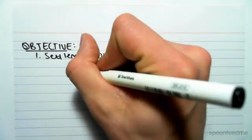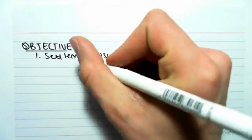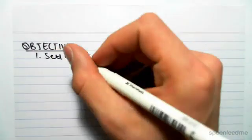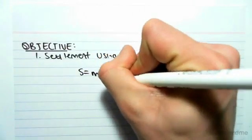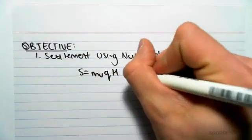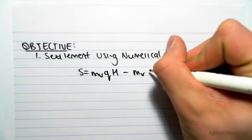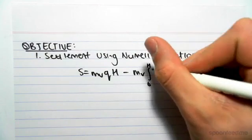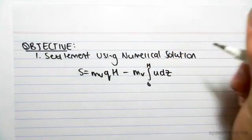First up, we need to look at the formula for settlement. This formula is just for a numerical solution; you wouldn't be able to use this in any other circumstance. Settlement equals mv*q*H minus mv times the integral from 0 to H of u dz. It looks very hard, but it's very simple.